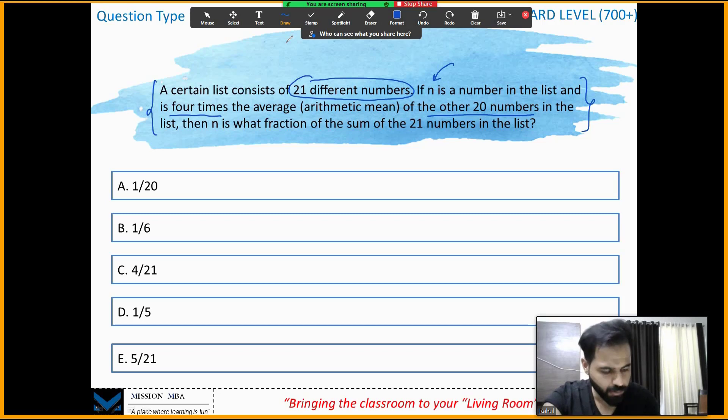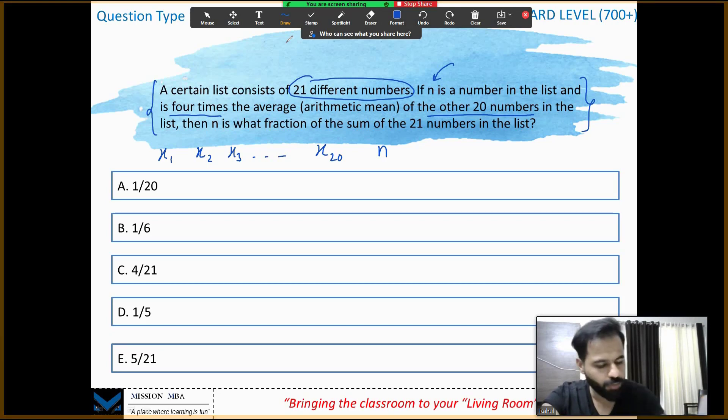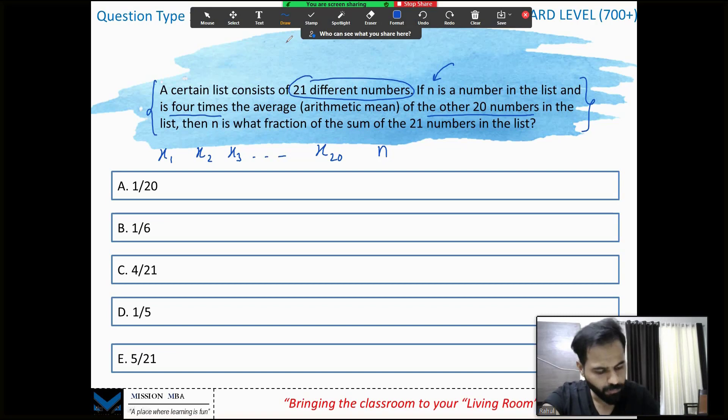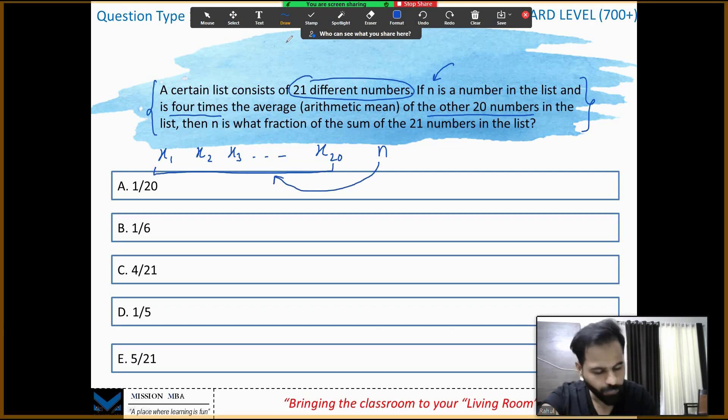Whenever you see these kinds of things, I'm going to assume the numbers as x₁, x₂, x₃, and so on till x₂₀, and one is our n. Then n is what fraction of the sum of the 21 numbers? To find some relation between n and all of these together, of course I cannot find each of them individually. No data is given. Let's see how I'm going to approach it.